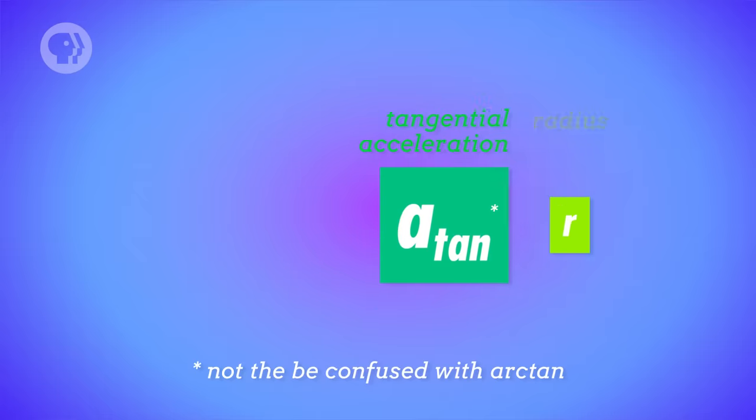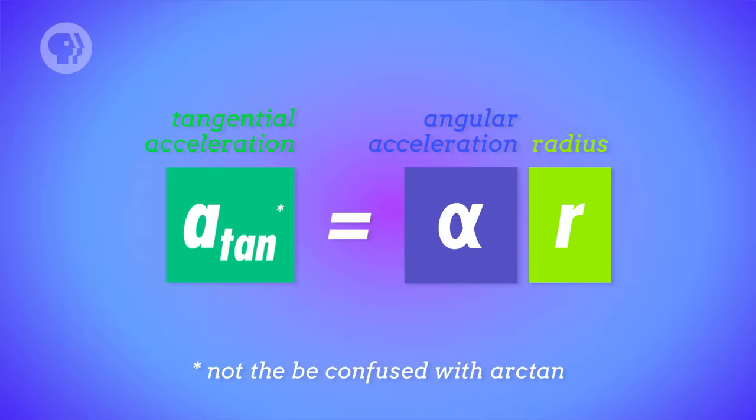But there's also tangential acceleration, which describes whether an individual point on a rotating object is speeding up or slowing down. And like linear velocity, tangential acceleration depends on the distance between the point and the center of the object. More specifically, it's equal to the angular acceleration times the radius.